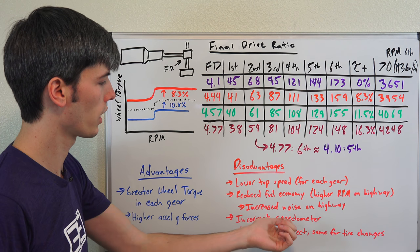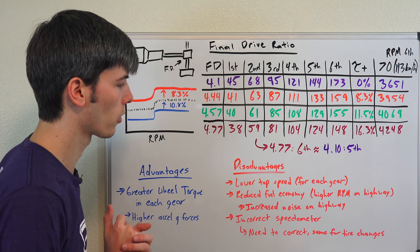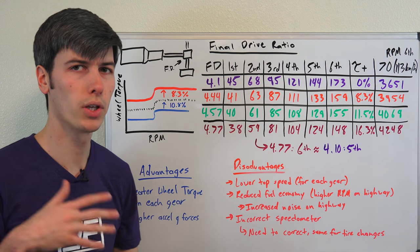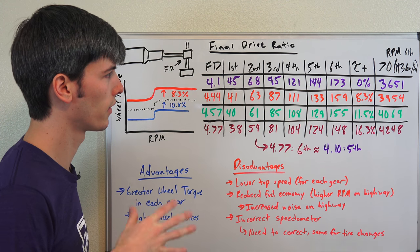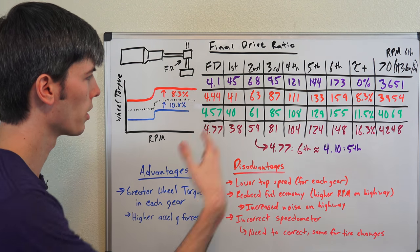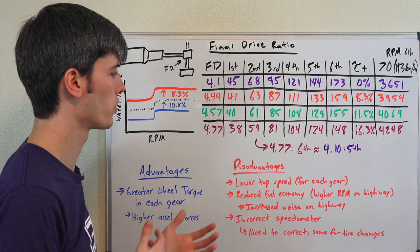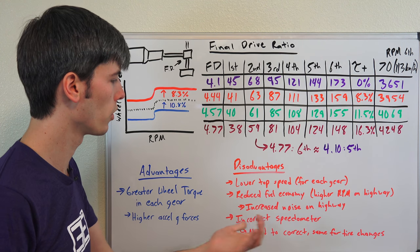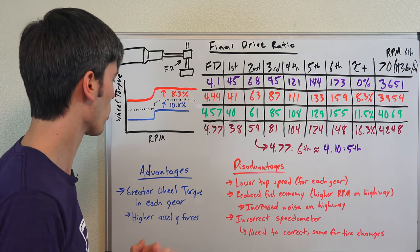But you will need to change something in order to make sure your speedometer is correct. The same thing applies if you change your wheels and tire sizes significantly from the stock setup. You're going to mess with your speedometer. You're going to mess with the gearing. And that's going to mess with your speedometer and change the speed that you're reading. And so you may have to buy a device in order to correct that.